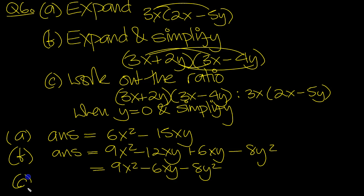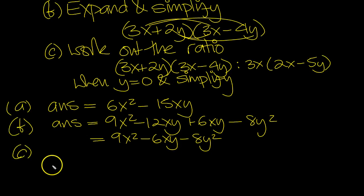Now part C. Work out the ratio of this when y is 0. Well here, put y is 0 in then. Here, what have we got? Y is 0 is just 3x. And y is 0 is just another 3x.